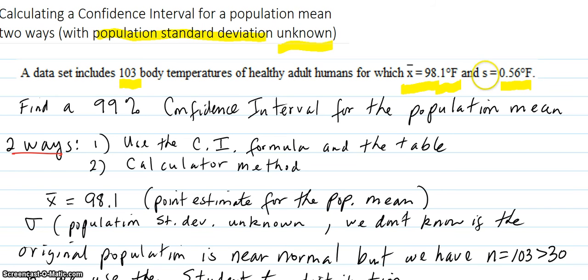That's the sample standard deviation. We don't know the population standard deviation, but the n size, which is 103, is certainly greater than 30. So we're able to use the t distribution.